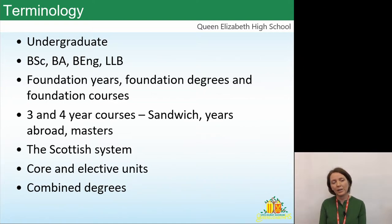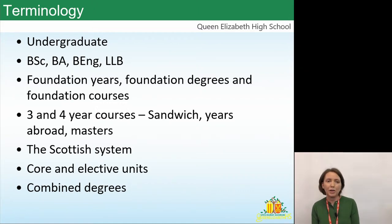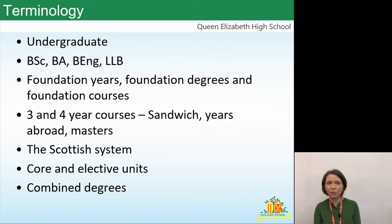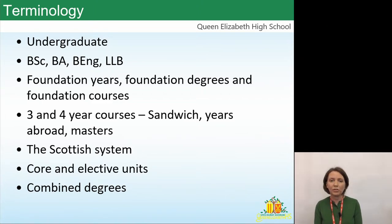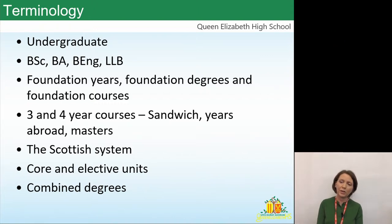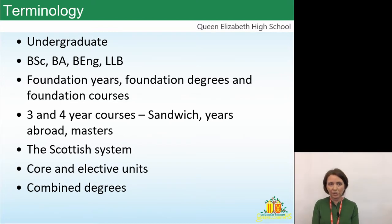The Scottish system organises university differently — students embark on four-year courses as standard. The first year is a broad opportunity to explore more than one subject, usually three subjects, before narrowing down and specialising after year one. Some English universities are starting to operate similarly within a three-year degree, allowing some exploration in year one before specialising. It's worth students finding out more about this if they're uncertain which degree they want to study.